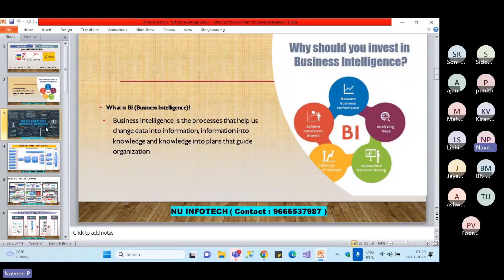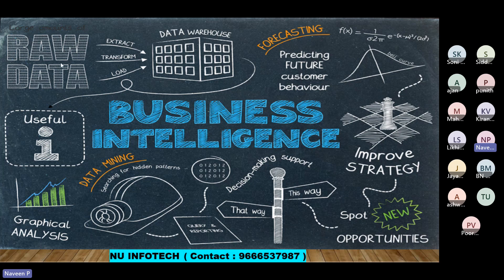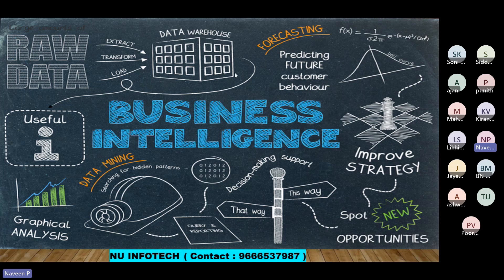If you look at the complete flow of business intelligence — how it happens in the real world — we get a lot of raw data. The raw data can be of any kind of business. For example, if you take a supermarket in Bangalore with 15 branches in different areas, whatever business transactions happen in those stores, we get that data. From that raw data, we create a data warehouse system using ETL tools. SSIS is one of the Microsoft ETL tools.